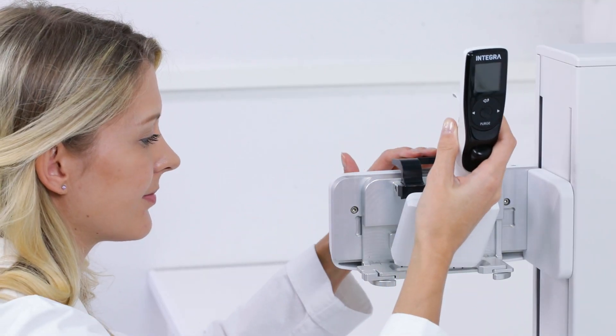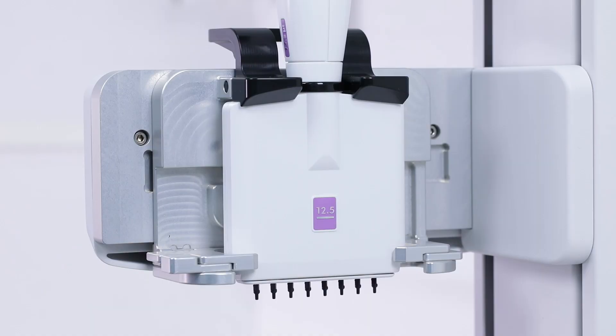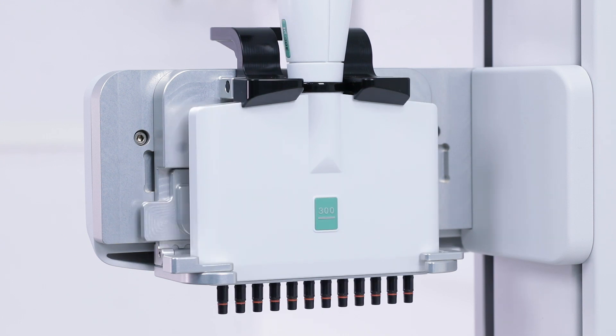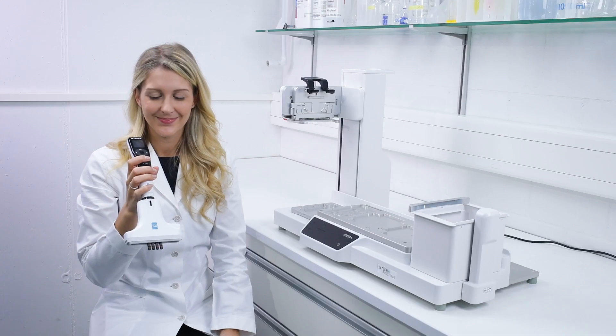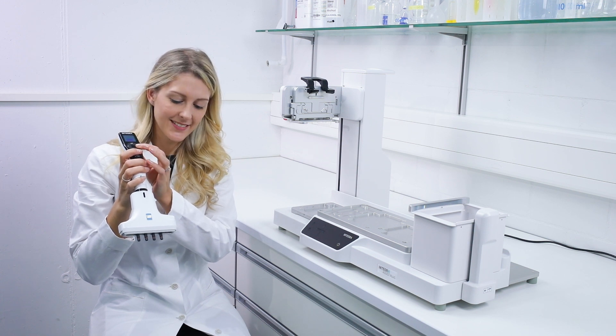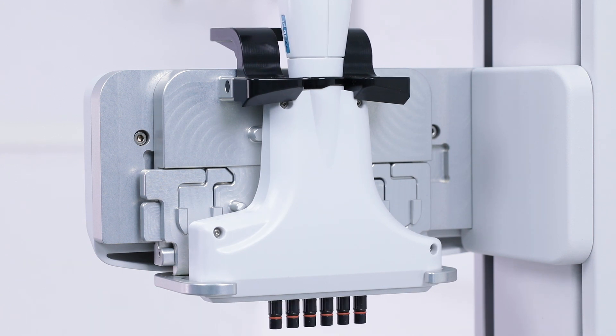The Assist Plus works with all Integra electronic multi-channel pipettes covering a wide range of volumes and number of channels. This allows for adapting to many different applications. All Voyager adjustable tip spacing pipettes fit on the Assist Plus, making it the only benchtop pipetting robot which is able to pipet between different labware formats.